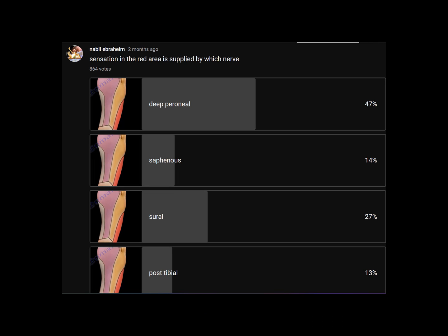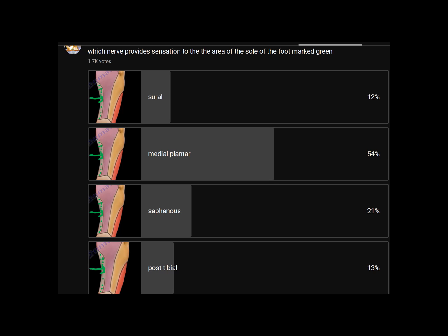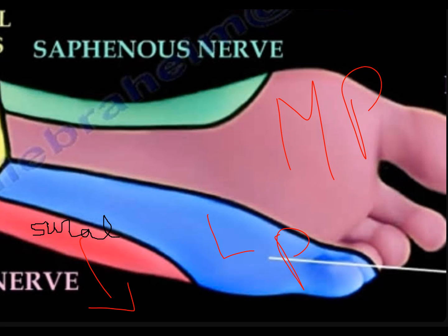Sensation of the foot is confusing. When asked about sensation in the red area, viewers said it comes from the deep peroneal nerve — that was wrong. It comes from the sural nerve. When asked about sensation in the area marked by the green arrow, they said it comes from the medial plantar nerve, but the correct answer is the saphenous nerve. Here is a picture of the bottom of the foot showing the saphenous nerve area, the sural nerve area, and the medial and lateral plantar areas. Try to memorize that.